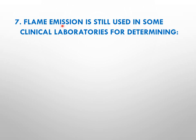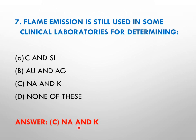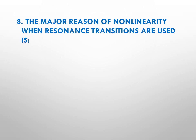Question number seven: flame emission spectroscopy is still used in some clinical laboratories for determining — options: A is carbon and silicon, B is gold and silver, C is sodium and potassium, D is none of these. The right answer is C, that is sodium and potassium. Flame emission spectroscopy is generally used for determination of sodium and potassium.